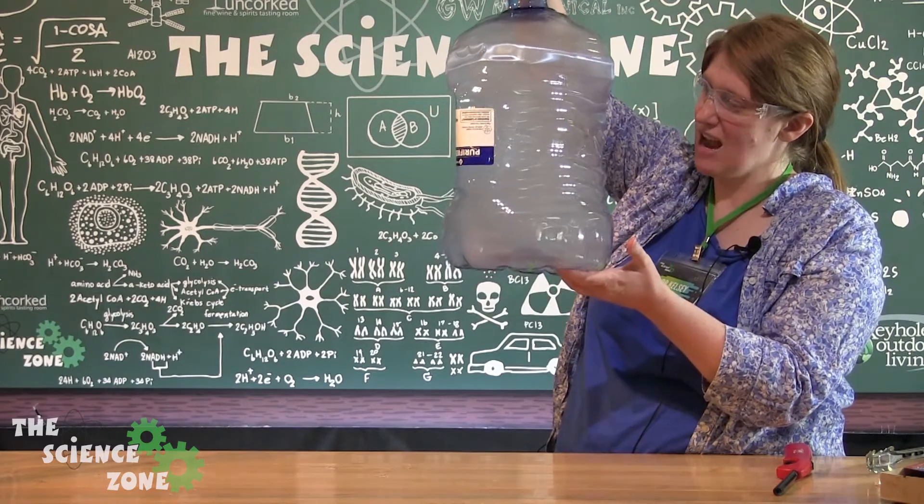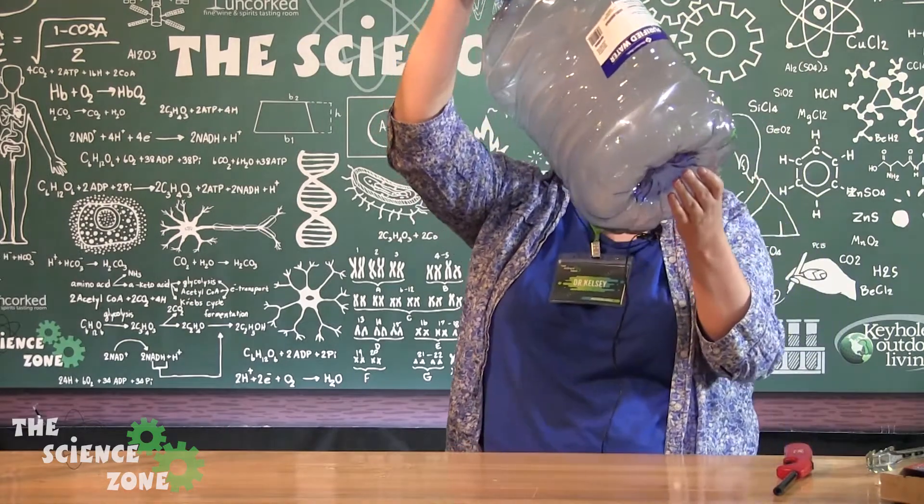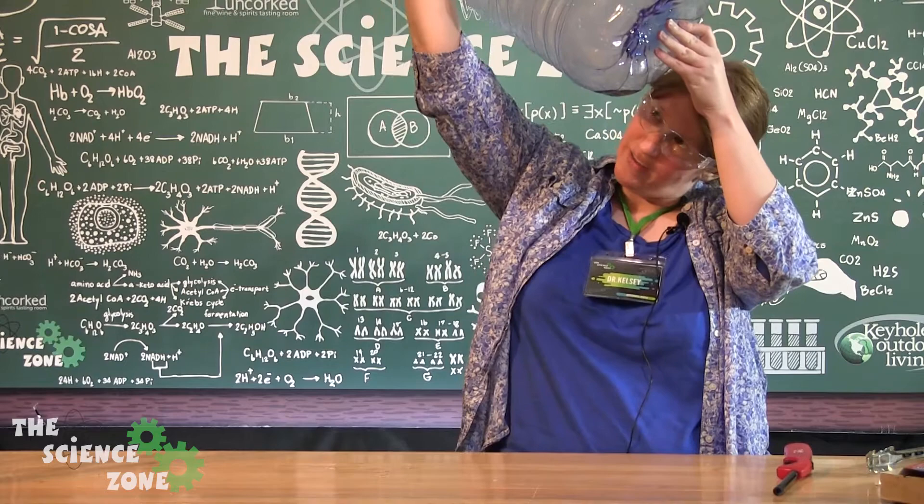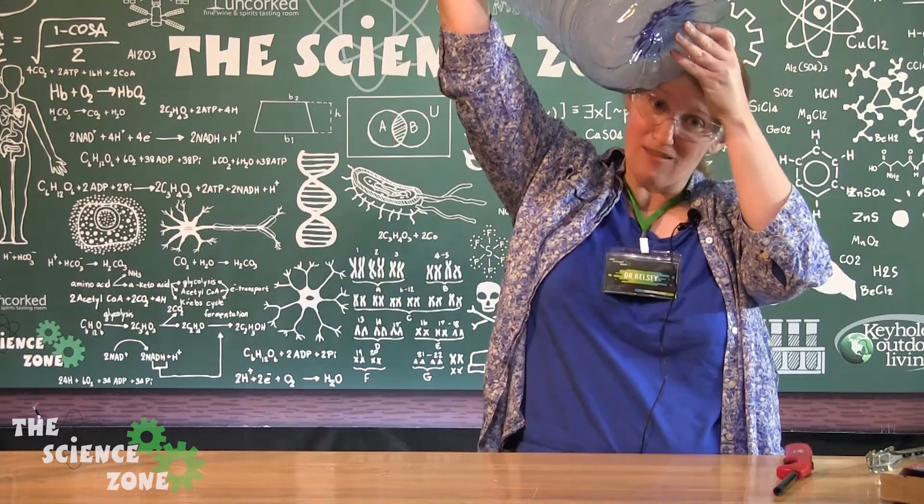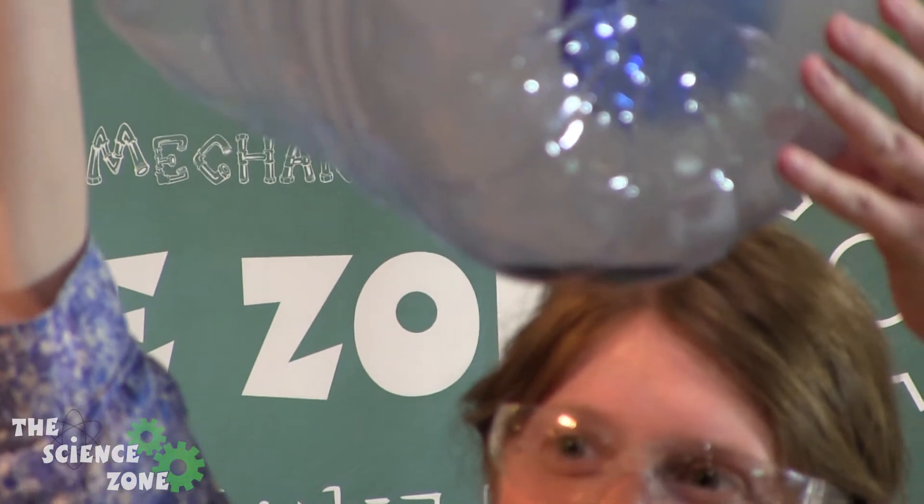If I hold my hand here long enough, we'll see that bottle continue to collapse. And look, there's water forming at the very bottom of the bottle. So we see that our cloud is actually raining.